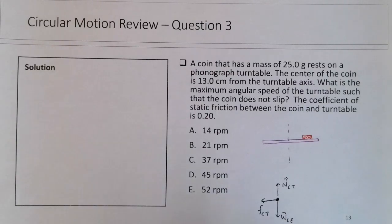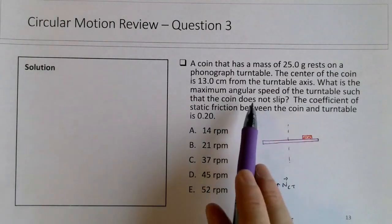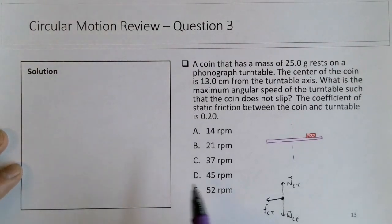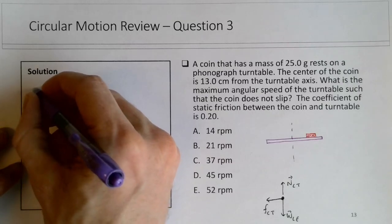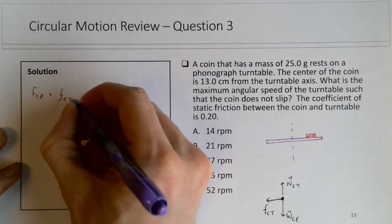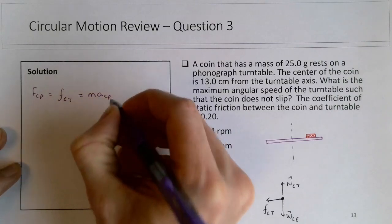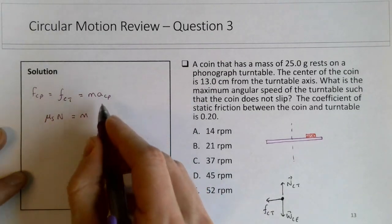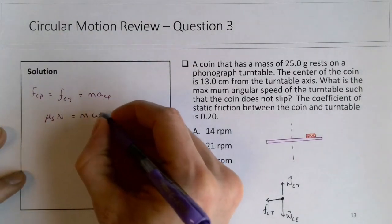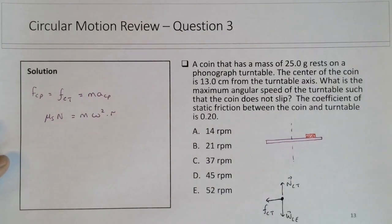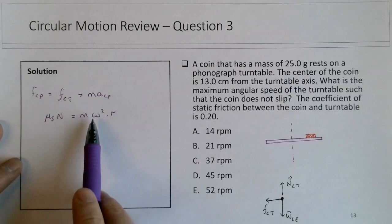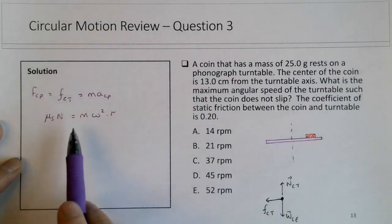We're looking for the maximum angular speed, so we'll refer to the maximum static friction before it starts to slip. And we're looking for the angular speed, so that's omega, so ideally what we want to do is describe the centripetal acceleration in terms of omega. So the F_cp in this example will be the friction force on the coin by the turntable, and that will be the mass times a_cp. This friction force, I'm looking for the maximum, so this will be mu_s N. And I would like to describe a_cp in terms of omega, so it's equivalent to omega squared times R.